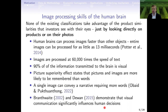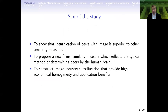Breithwire and Demand demonstrate that visual communication significantly influences human decisions. So it's not only that we are so good at processing images, but it also really impacts the decisions we make. That creates the goals of our study: first, to show that identification of peers with image is superior to other similarity measures; then to propose a new firm similarity measure that reflects the typical method of determining peers by the human brain; and finally, to construct an image industry classification that provides high economic homogeneity and application benefits.